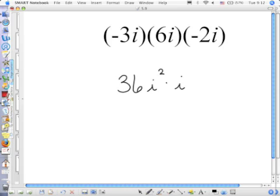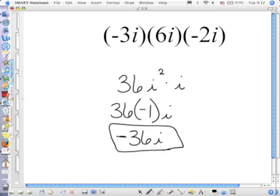i squared is positive or negative 1? Nope. Negative 1. So this is 36 times negative 1 times i. You don't have to write all that down as your steps. I'm just trying to let you see. So your final answer is negative 36i. i squared equals negative 1.